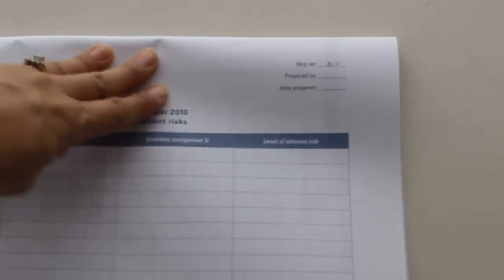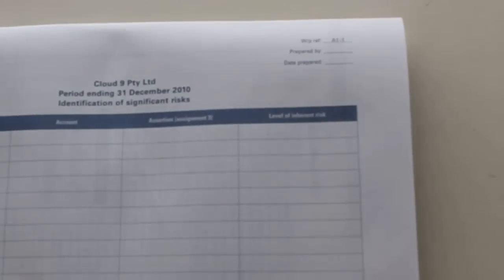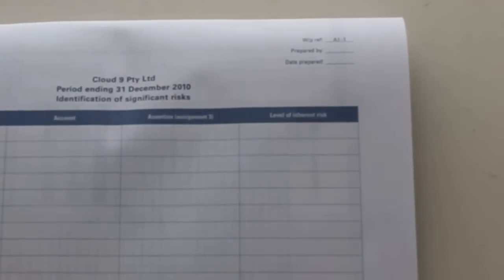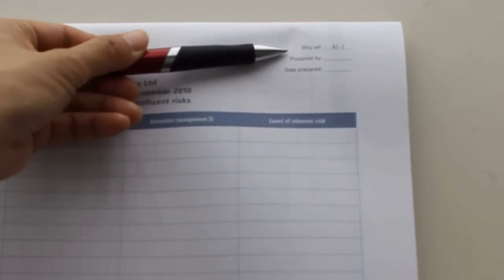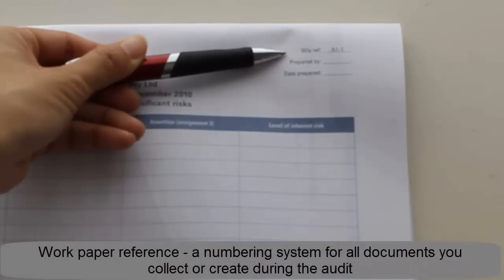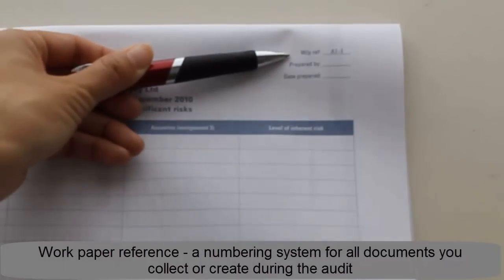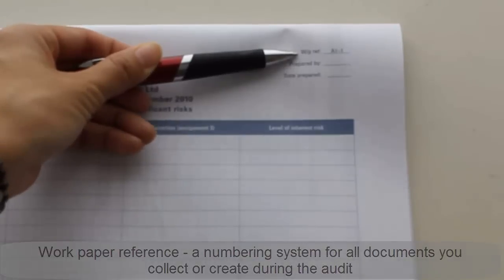So you'll notice that a work paper has a couple of different common components, regardless of where you're auditing, what country, what client. The first is always going to be a work paper reference at the top of the page. That work paper reference is our numbering system for work papers. And in this particular book,